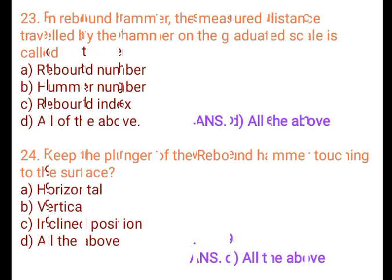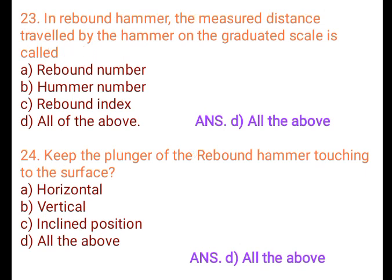Question 23: In rebound hammer, the measured distance travelled by the hammer on the graduated scale is called: A. Rebound number, B. Hammer number, C. Rebound index, D. All of the above. Answer: D. All of the above.